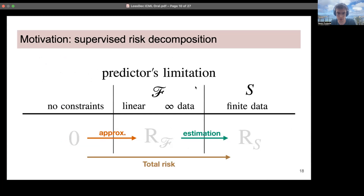As a background and warm-up, let's think about the risk decomposition in the supervised case. In the supervised case, there are typically two constraints to take into account: first, what predictor you're using — the function family and constraints, for example if you're using linear predictors — and second, the errors that come from training that linear classifier on finite data. The first error component is called the approximation error, and the second is estimation or generalization gap. The sum of the two gives you the total risk.